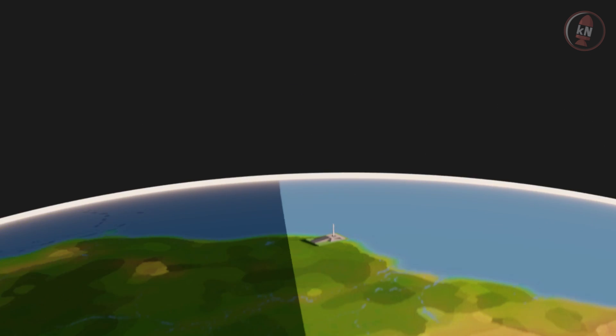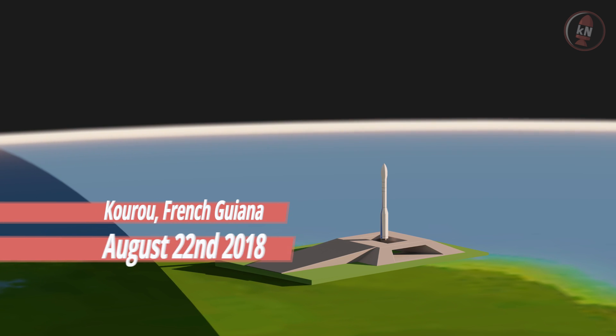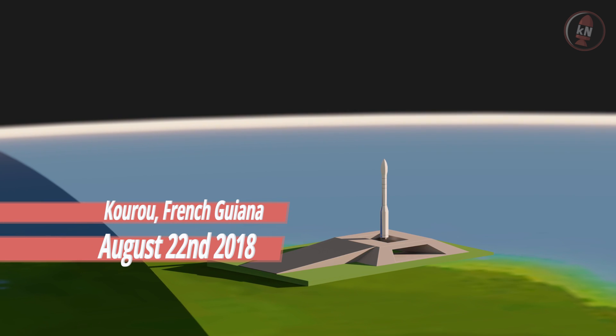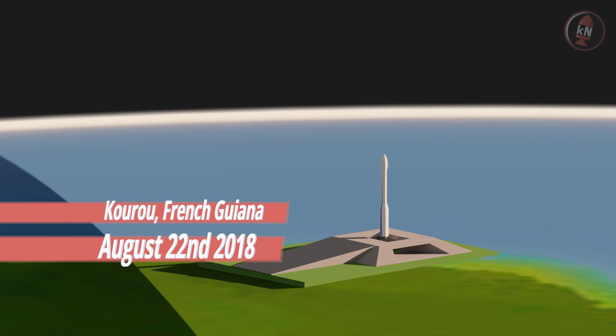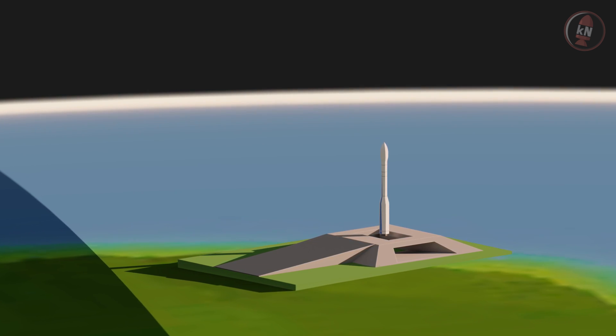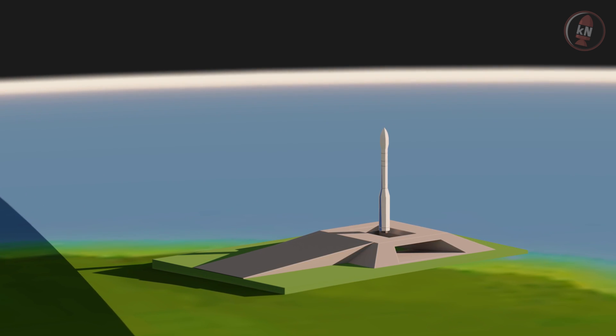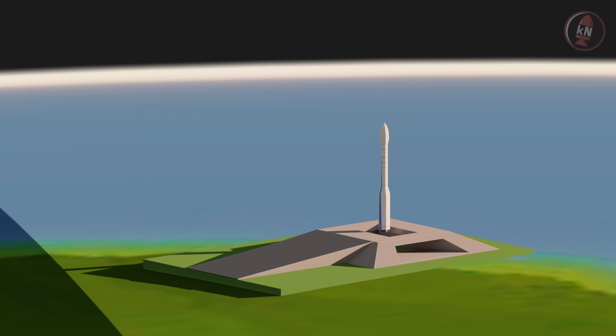And finally La Fusée d'Europe, the European Vega rocket. It launched yesterday evening August 22nd at 2120 UTC from Kourou in French Guiana which is in the north of South America close to the equator. It will head north following a sun-synchronous polar orbit with an inclination of 97 degrees.